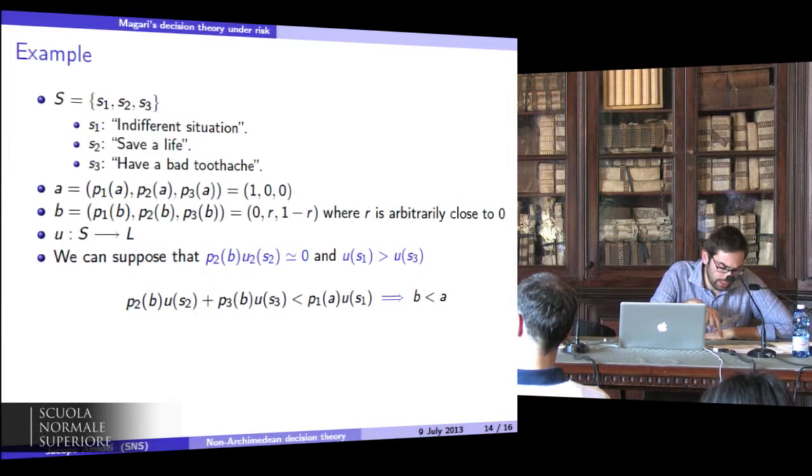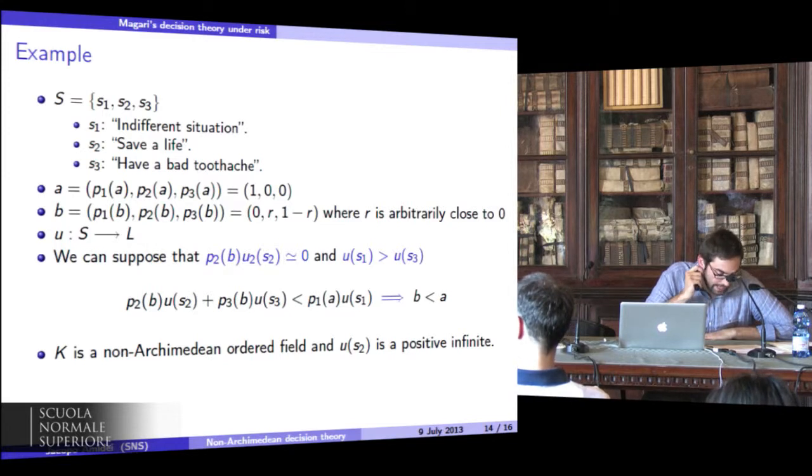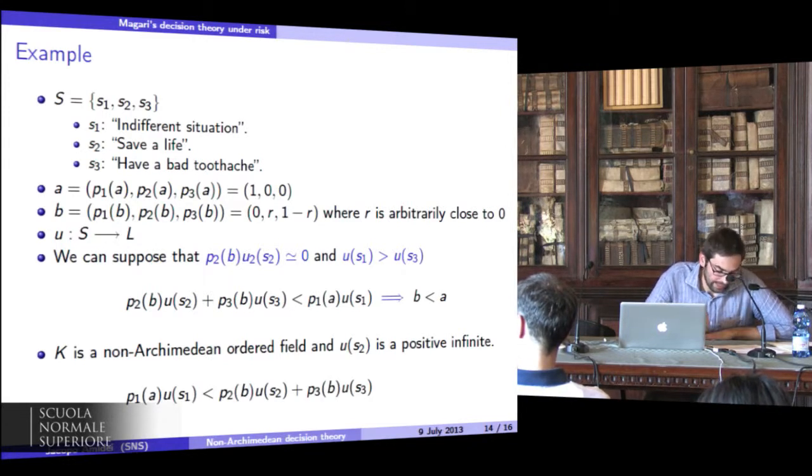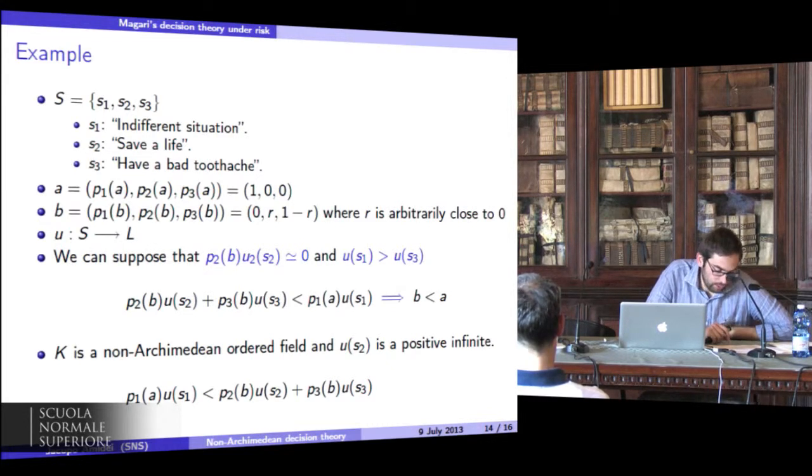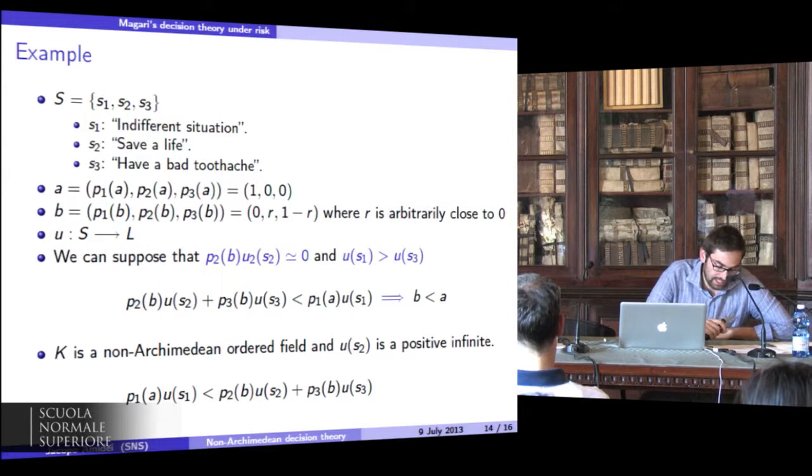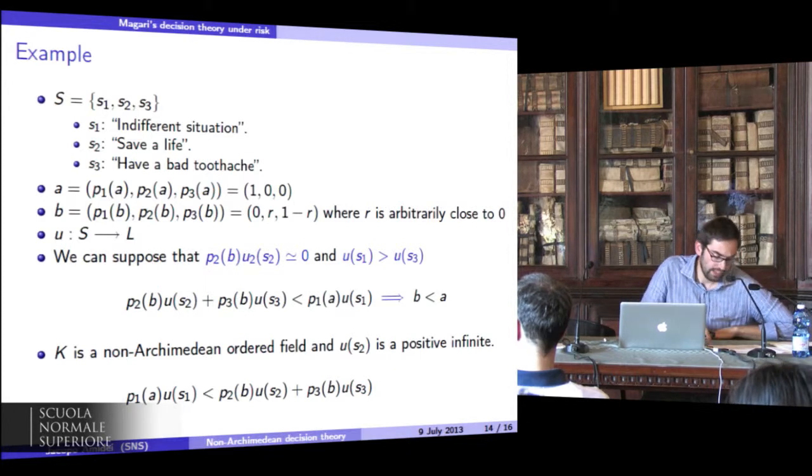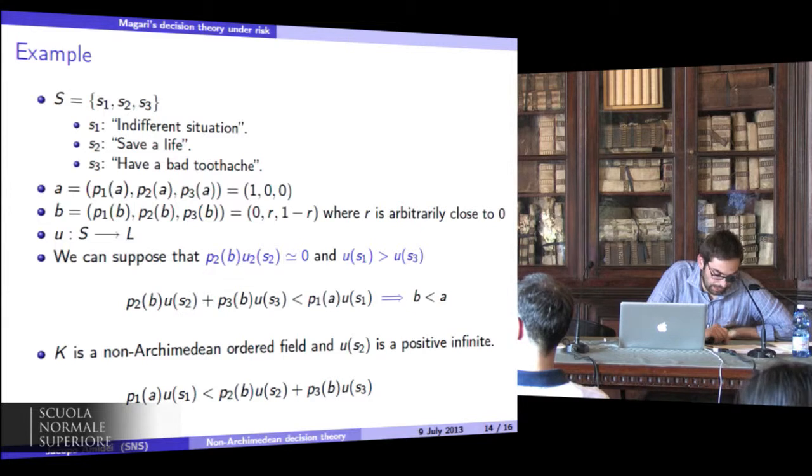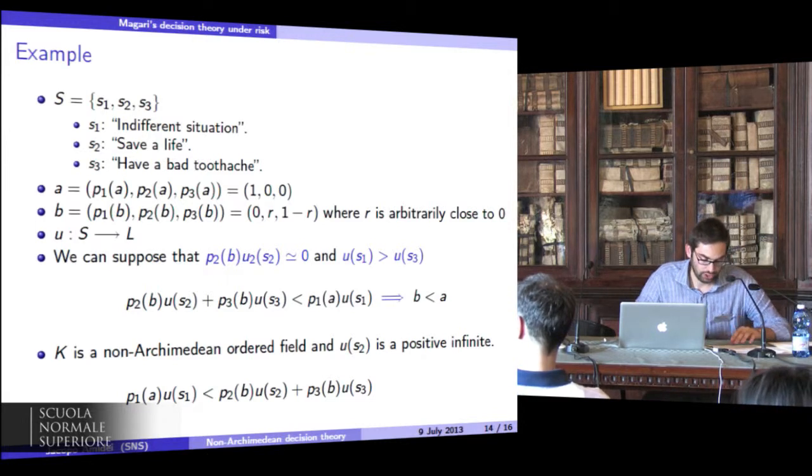And here you can use the non-Archimedean field. In fact, if K is a non-Archimedean ordered field and U(s_2) is a positive infinite, then the expected utility of A is less than the expected utility of B, because the value of p_2(B) times U(s_2) is infinite. And the sum of infinite and a real number is infinite. And so this is an infinite. On the other hand, the expected utility of A is a real number. And so we have that the expected utility of A is less than the expected utility of B by definition of infinite.